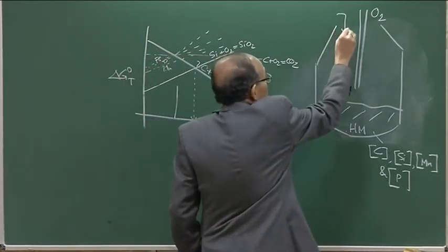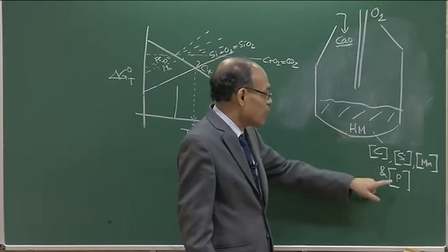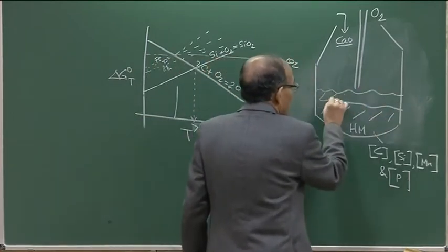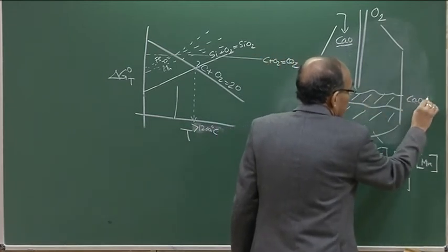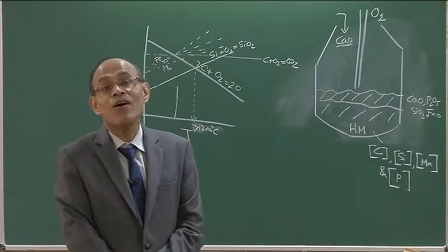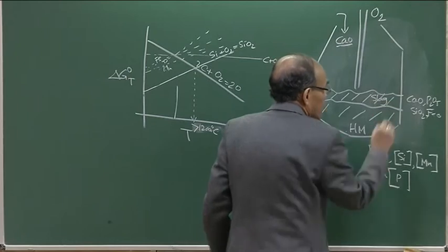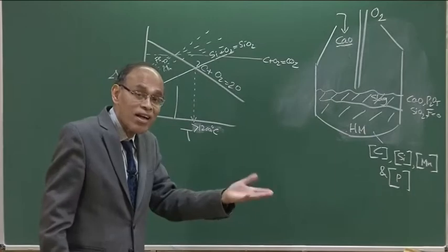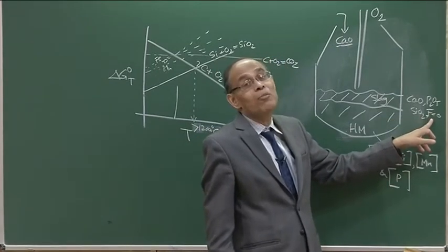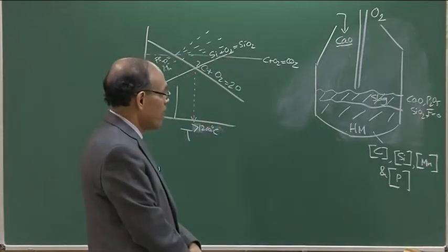Once silicon and iron oxidize, the slag phase in the basic oxygen steelmaking converter will contain CaO, phosphorous pentoxide (P2O5), silicon dioxide (SiO2), and FeO. Unlike in the blast furnace where there is practically no iron oxide in the slag, in oxygen steelmaking the slag contains a significant amount of FeO — from 15 to about 25 percent depending on process conditions — representing a considerable iron loss.